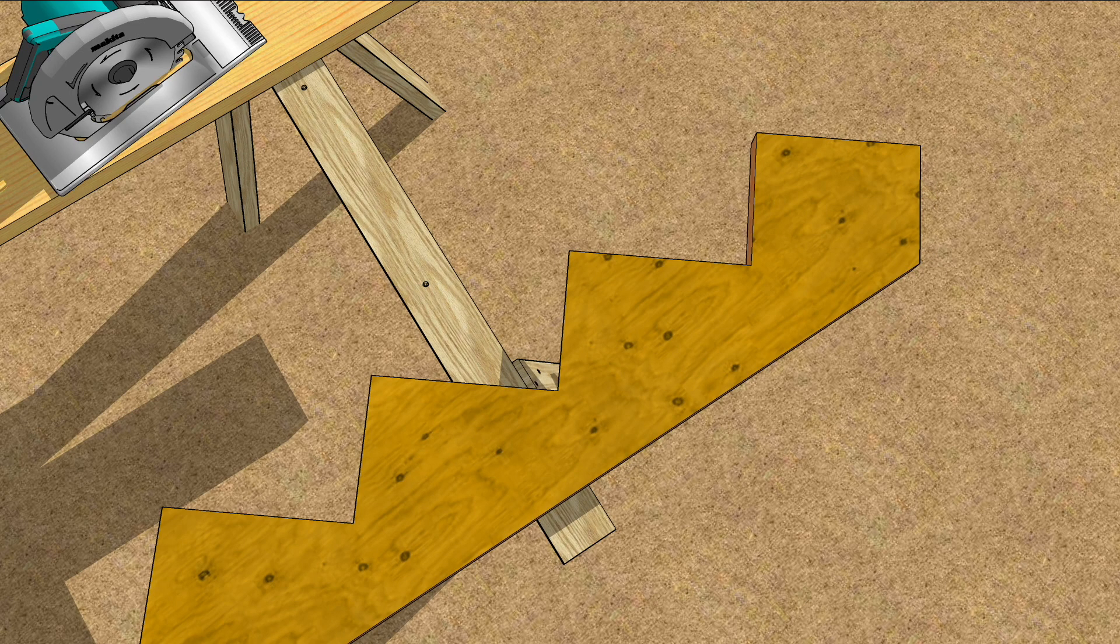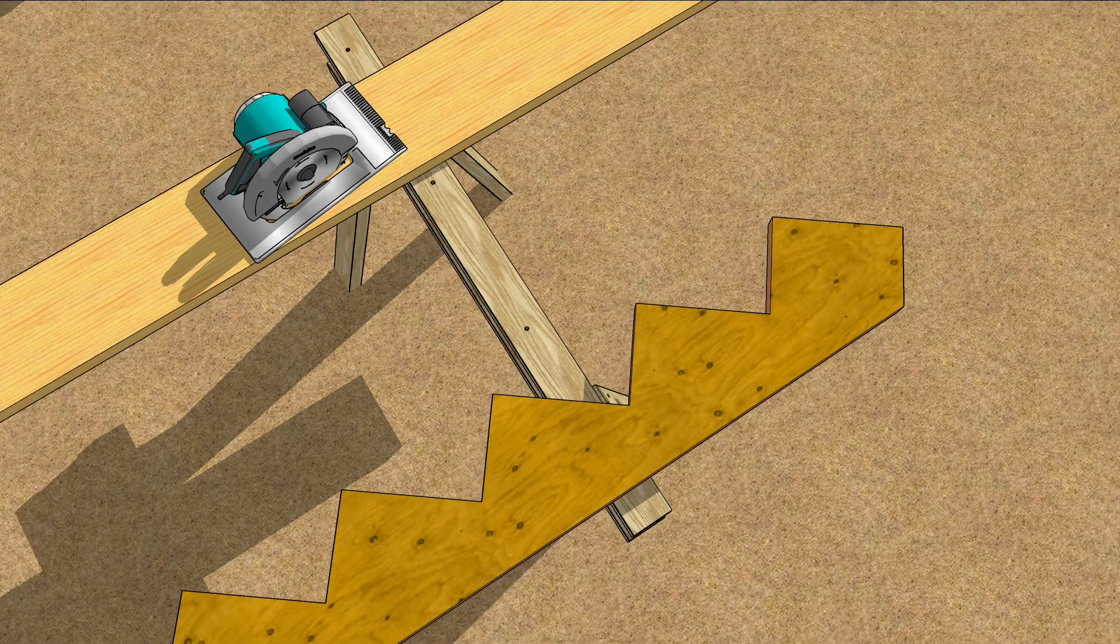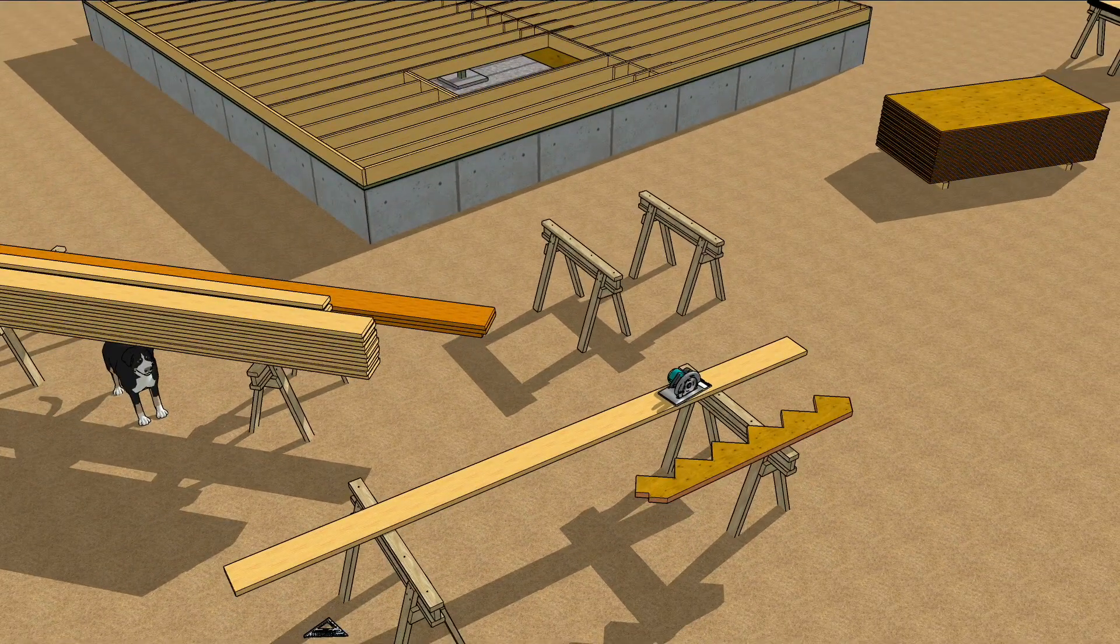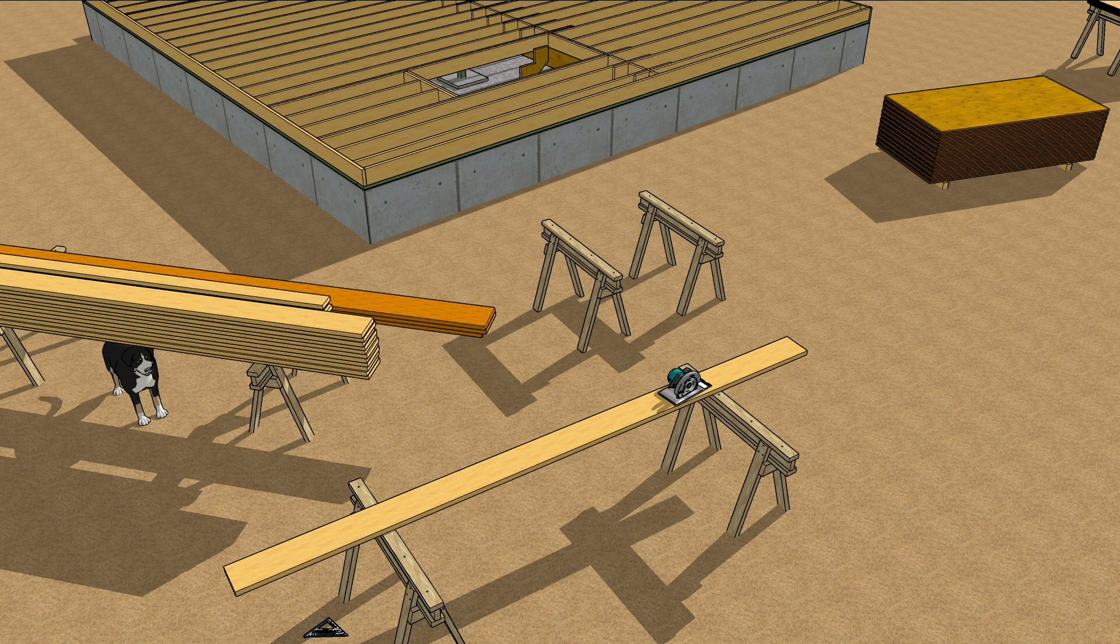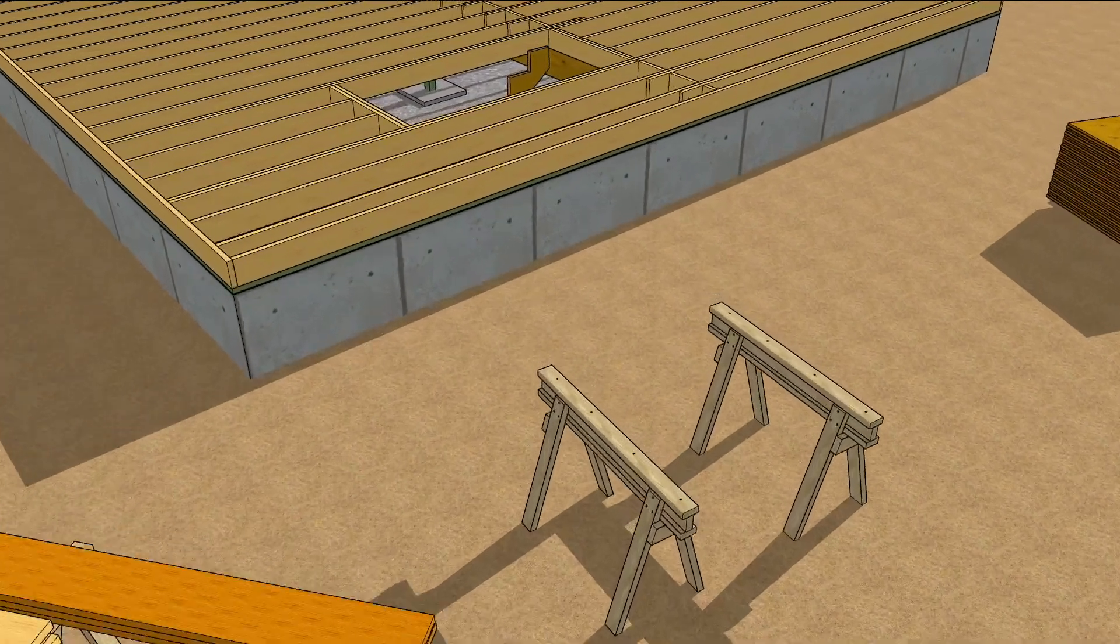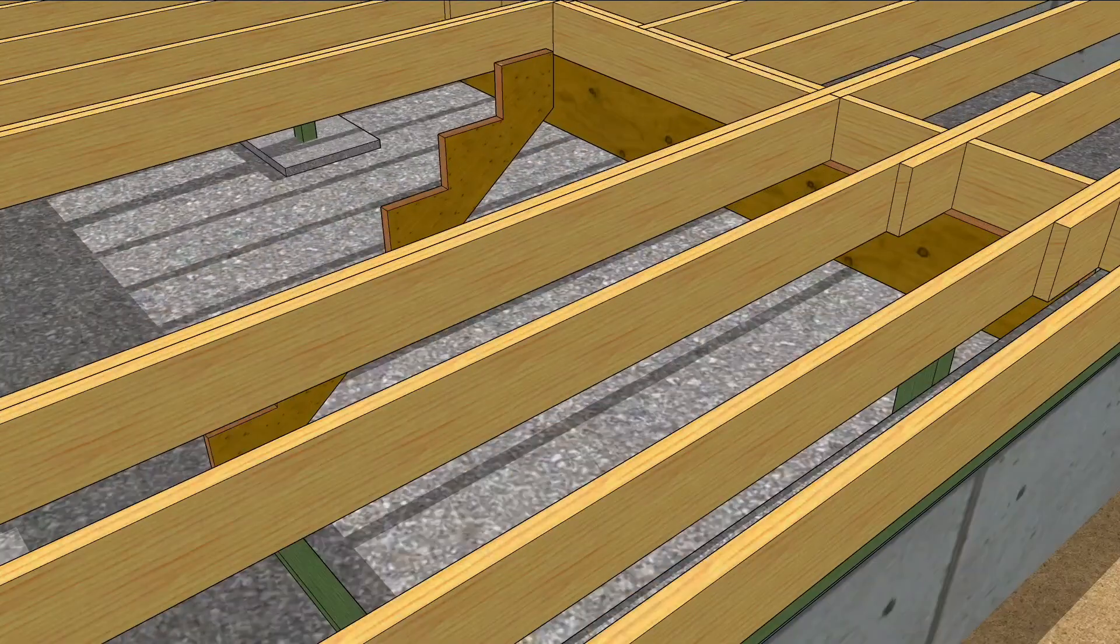For utility stairs like these, you can use the first stringer as a pattern for the other couple of stringers. So trace them and cut them out. But before doing that, it's usually a good idea to make sure this first stringer actually fits where it's supposed to. So give it a test drive in the stair opening.